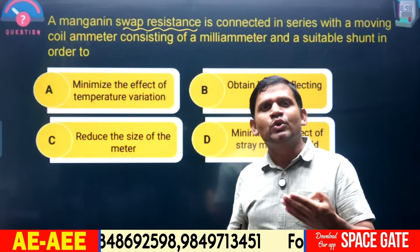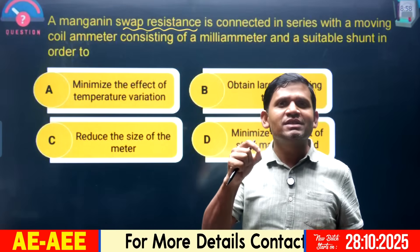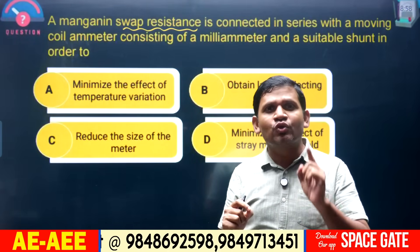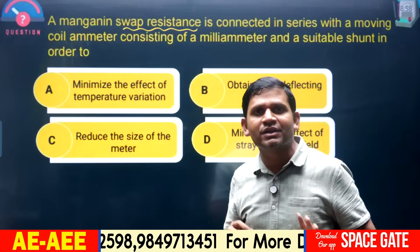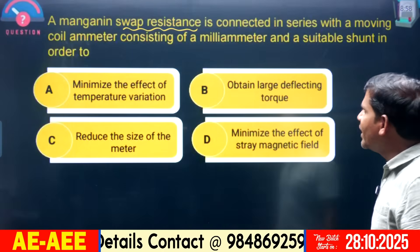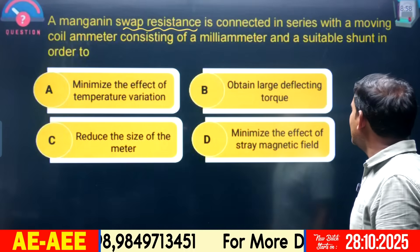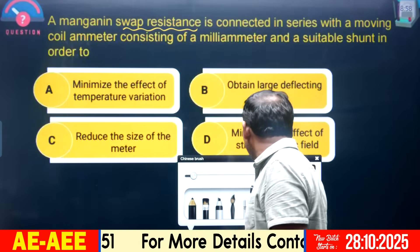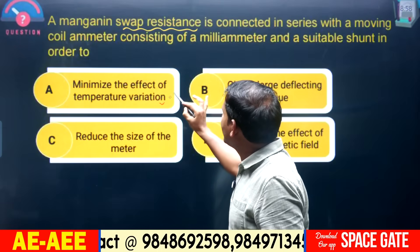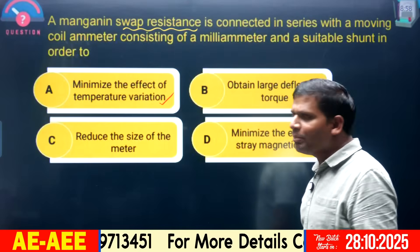A swamping resistance is used to reduce temperature errors — this is very important and exam questions are frequently based on it. Swamping resistance is always connected in series with the meter and is selected to be 20 to 30 times more than the meter resistance. The answer to this question is: to minimize the effect of temperature variation.